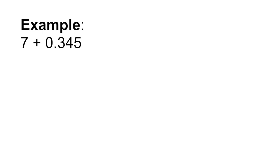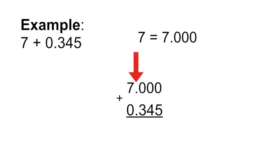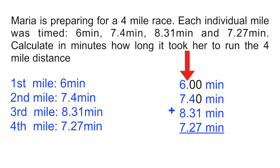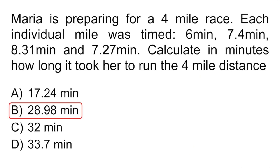Let's say they ask you to add 7 plus 0.345. In this case, 7 is equal to 7.000 — followed by three zeros. The reason is because if you were to add or subtract these two numbers, it's much easier if you have that decimal point and those numbers after the decimal point aligned. So if we add Maria's miles, we change 6 to 6.00 minutes and 7.4 to 7.40, aligning all decimal points nicely. When we add this, it gives us 28.98 minutes, which was option C.